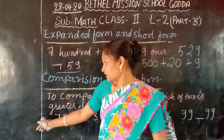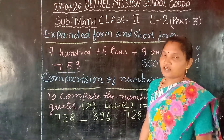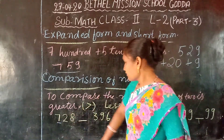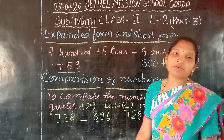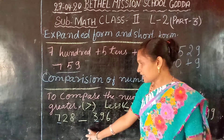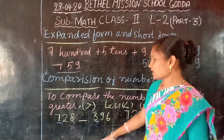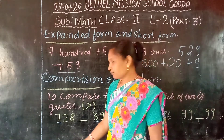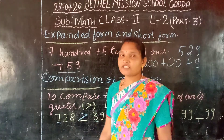Now here are the numbers: seven hundred and twenty eight and three hundred and ninety six. How will you see which number is greater? Let us look at the first digit. Here the first digit is seven and here it is three. Which number is greater — seven or three? Seven is greater than three. So seven hundred and twenty eight is greater than three hundred and ninety six.